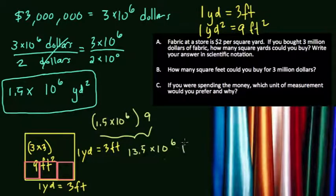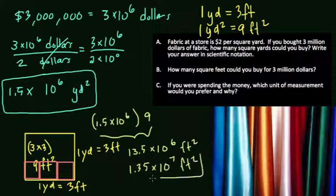Converting to scientific notation, we divide 13.5 by 10 to get 1.35, a number between 1 and 10. We balance that by multiplying by 10, so 10 to the 6th becomes 10 to the 7th. Therefore, 1.35 times 10 to the 7th square feet is how many we could buy for $3 million.